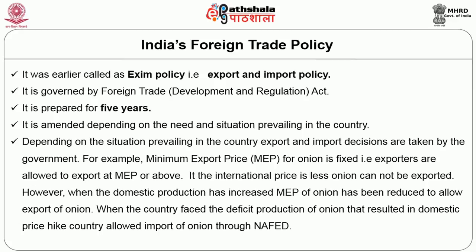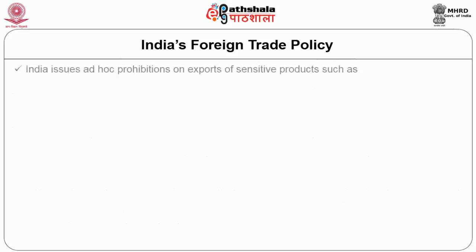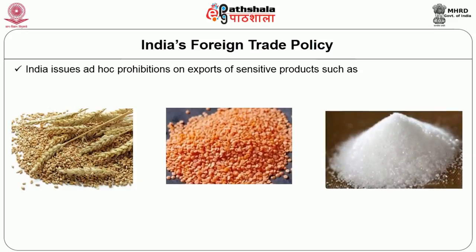If the international price is less than that, onion cannot be exported. However, when domestic production has increased, the MEP of onion has been reduced to allow export. When the country faced a deficit of production of onion, that resulted in domestic price hike — it even reached 100 rupees per kg. Then NAFED, a government organization — the Marketing Federation for Agriculture Commodities — is allowed to import onion, to stabilize the domestic price in India. For sugar export, India issues ad hoc prohibitions on export of sensitive products — not only sugar but also wheat and pulses.